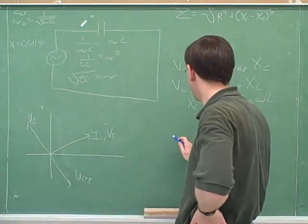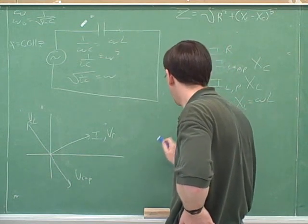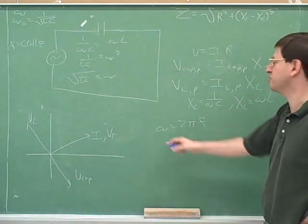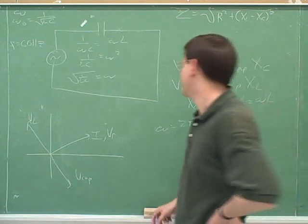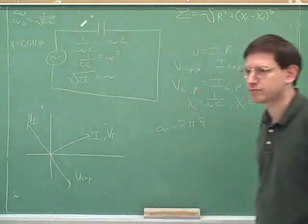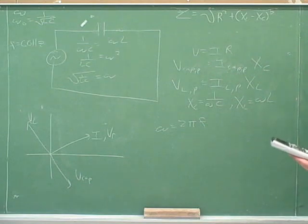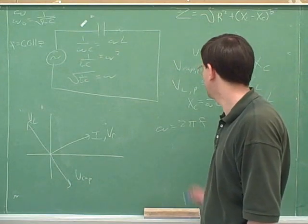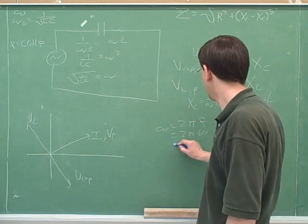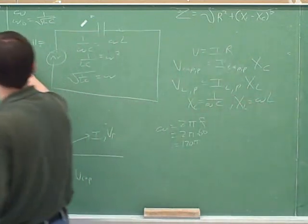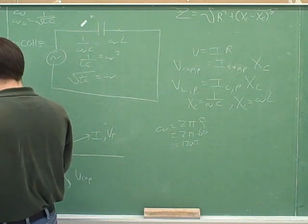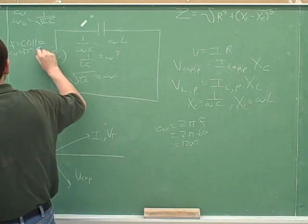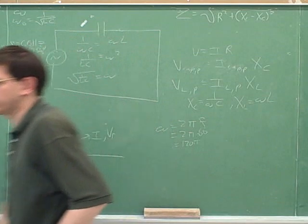Omega equals 2 pi f — not 2 pi omega. So right off the bat, we might as well figure out what omega is going to be. We can say it would be 120 pi, which equals 377 radians per second. That should be placed here because it's coming from the power source.